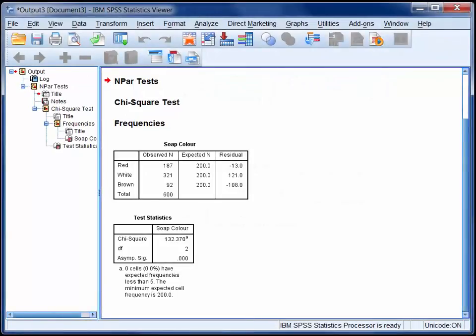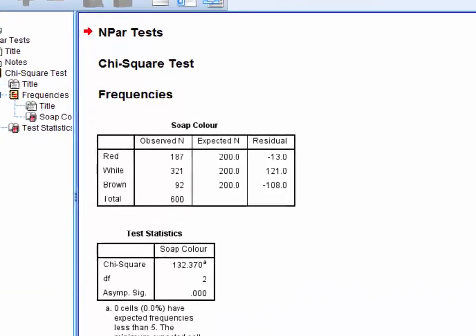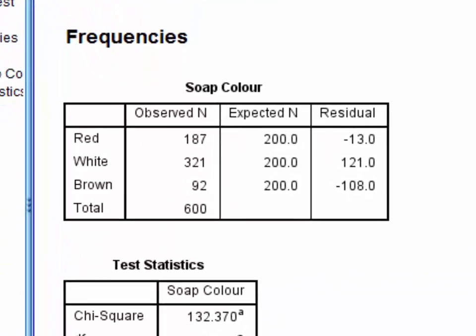So when you run a chi-square test for goodness of fit in SPSS, you get two tables of output. The first is just a summary table of the data. Here we can see that 187 people chose the red soap, compared to 321 who chose the white and 92 who chose the brown.